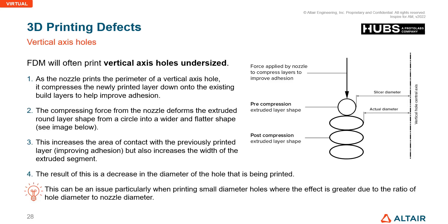Vertical axis holes: when a design has a hole inside and is manufactured via additive manufacturing, compression forces and stresses during the printing process cause deformation of the hole shape. The compressive force from the nozzle deforms the extruded round layer from a circle into a wider and flatter shape, meaning the final part will not match the original design geometry.